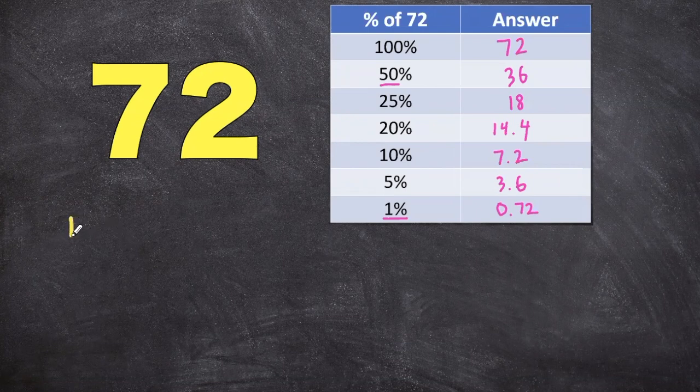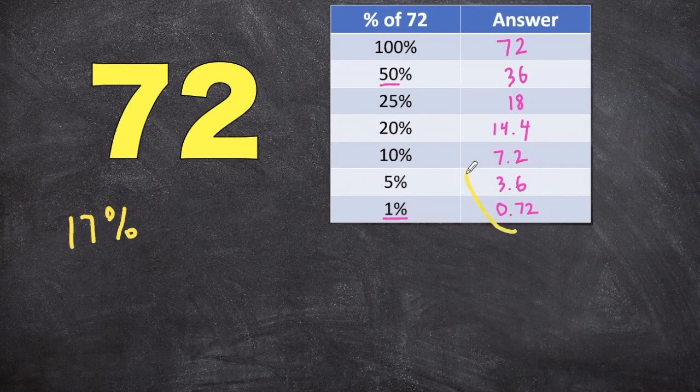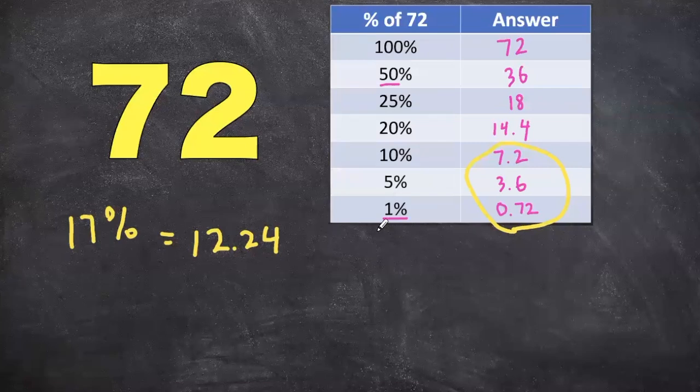So if we had a problem like find 17% of 72, we can refer back to this table. And so because we know the 10, 5, and the 1, we can add all these numbers together and add one more percent to it and say that our answer is equal to 12.24. I don't think there's any really quick way to do this mentally, but at least you know how to do it without using a calculator.